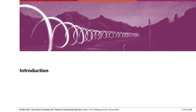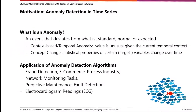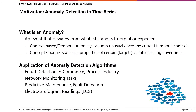First let us look at the motivation for our work. A common task in practice is to detect anomalous behavior in time series. An anomaly can be defined as an event that deviates from what is standard, normal, or expected. For instance, a simple outlier could be an anomaly, but in practice we often have to deal with more complex anomalies such as context-based anomalies.